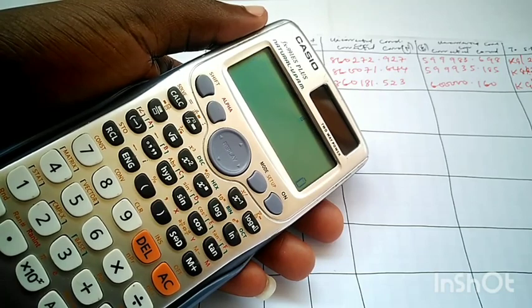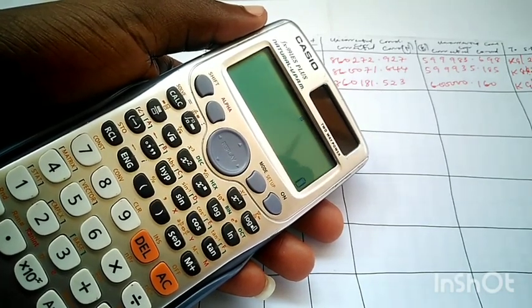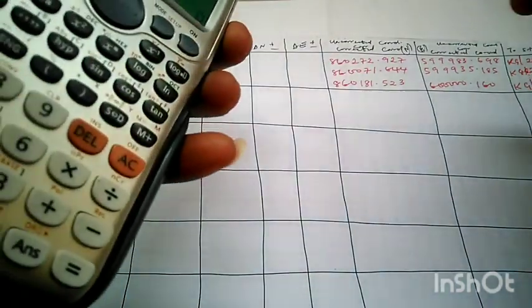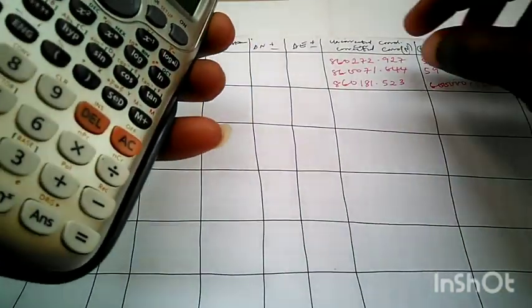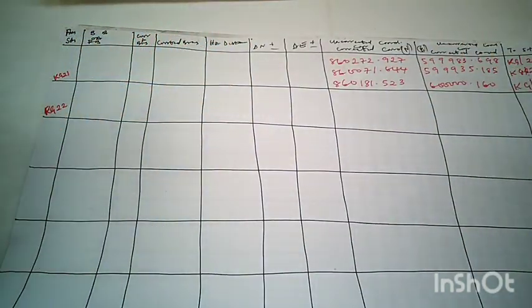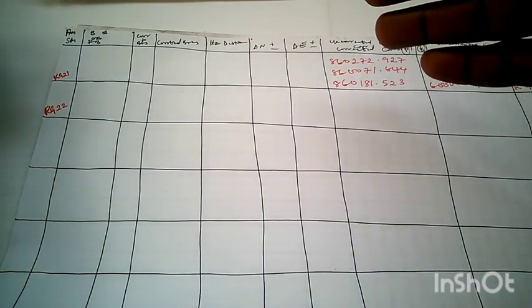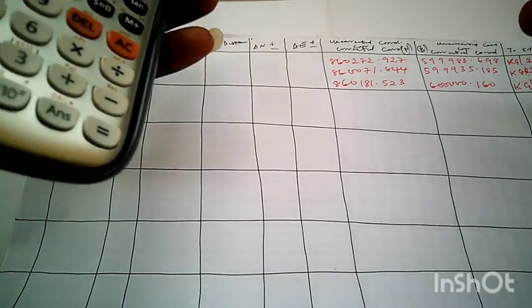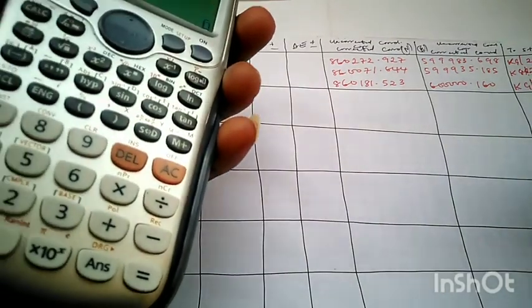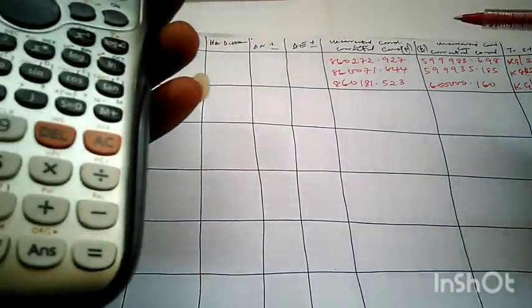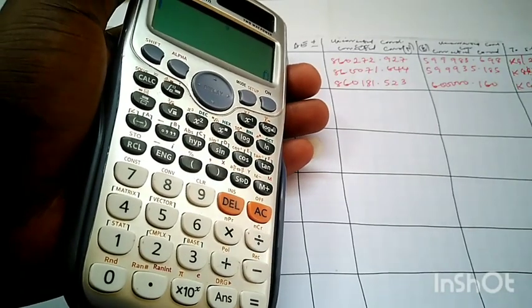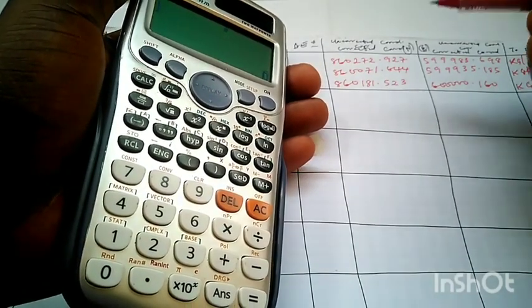On our last video we told you that if you want to arrange your controls on your back computation you will have to do it in a particular method which is very easy for you. Now to continue on this video we want to carry out the back computation of the coordinates of these controls.